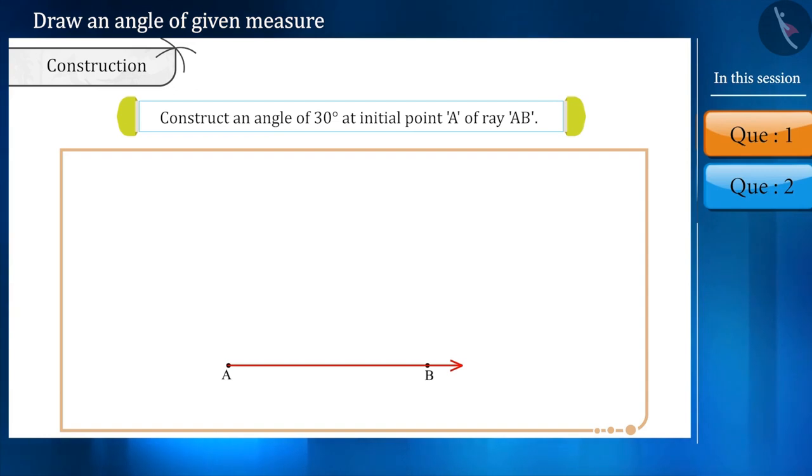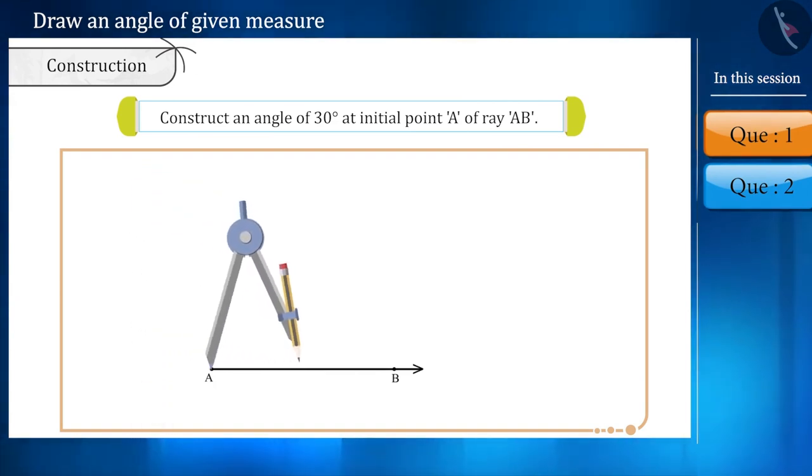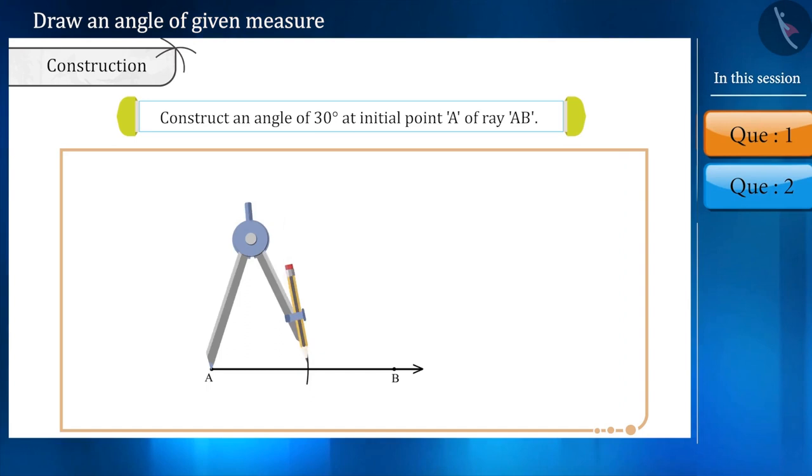Friends, we only have been given a ray AB. Now let's draw ray AB. Now, using a compass, draw a mark of any length like this and name the intersection point as C.